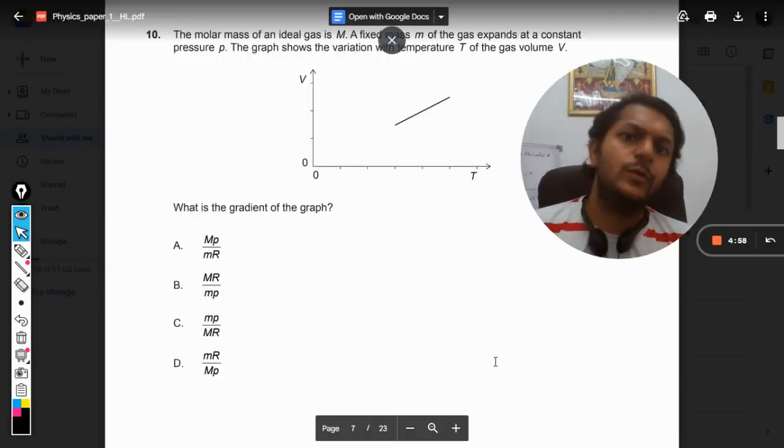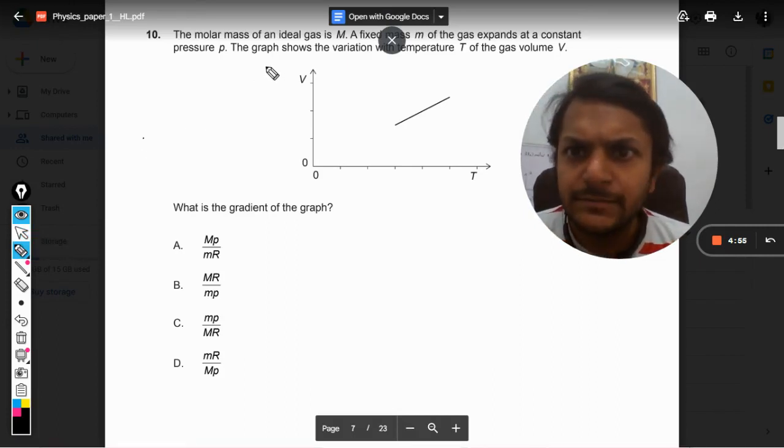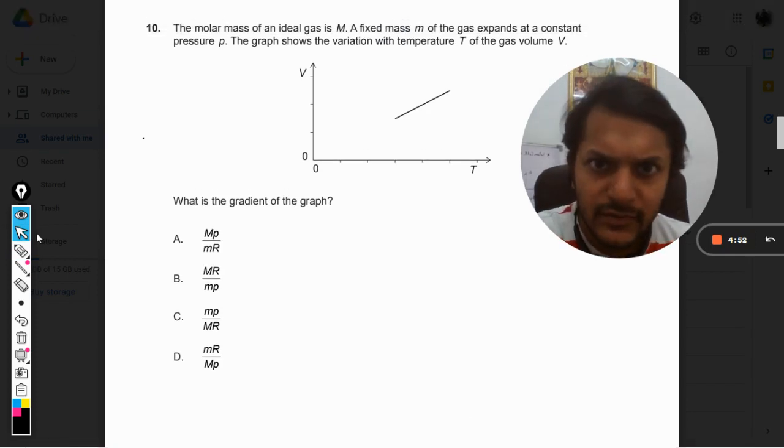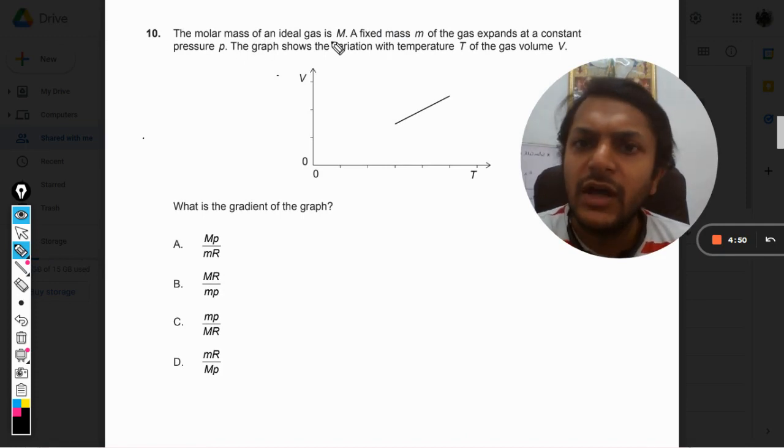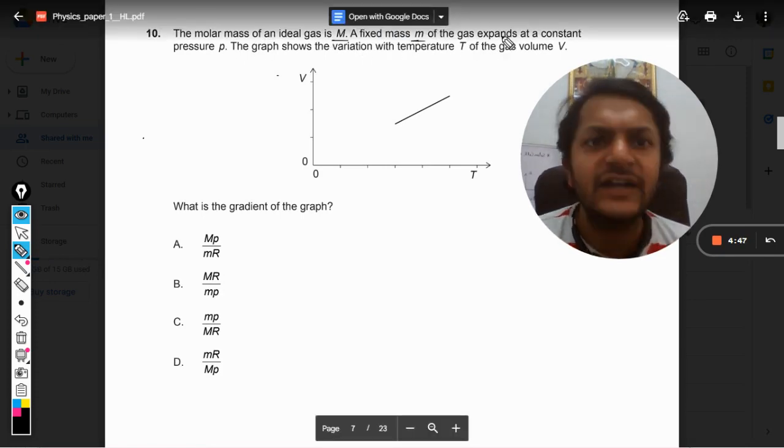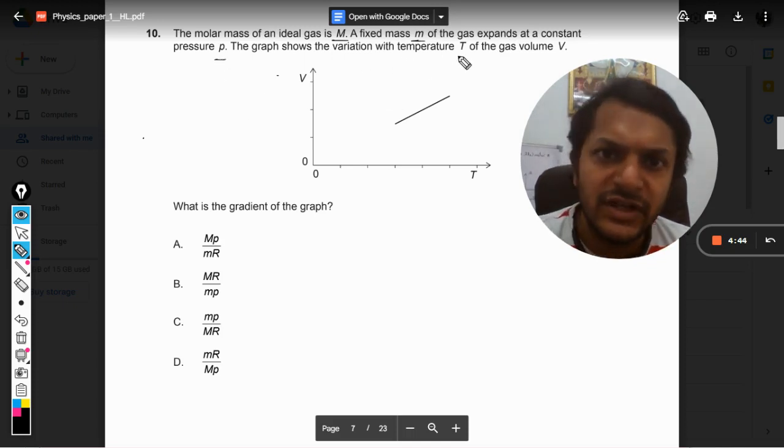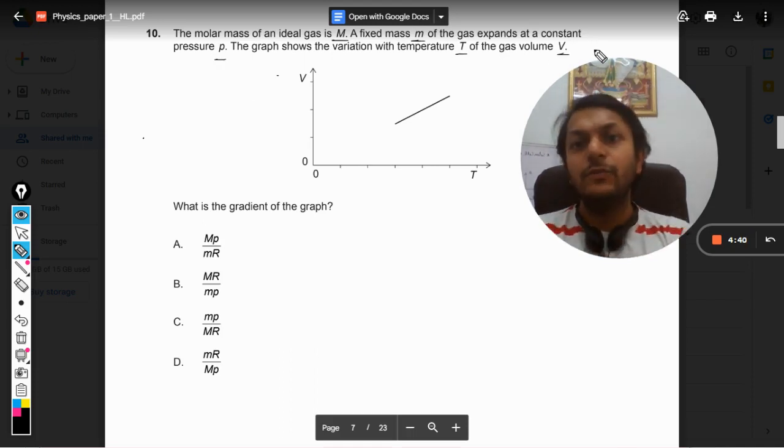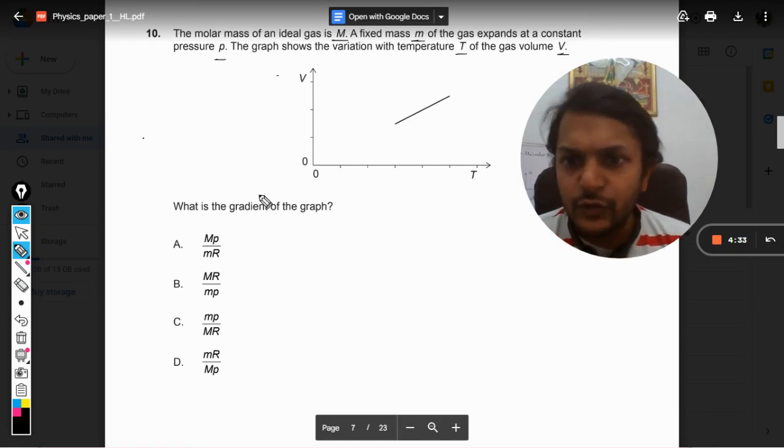Okay, so let us see what is there in this question. The molar mass of the ideal gas is capital M, and a fixed mass of small m of the gas expands at a constant pressure P. The graph shows the variation with the temperature capital T of the gas volume V.